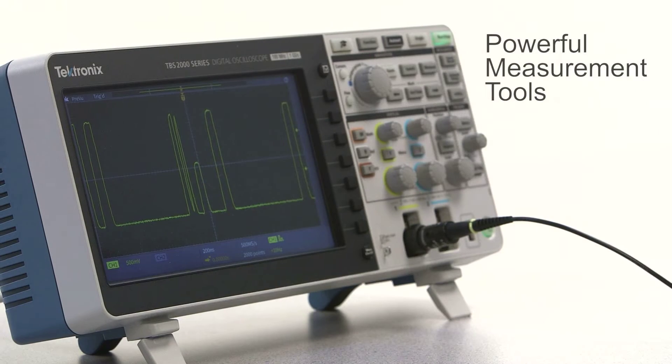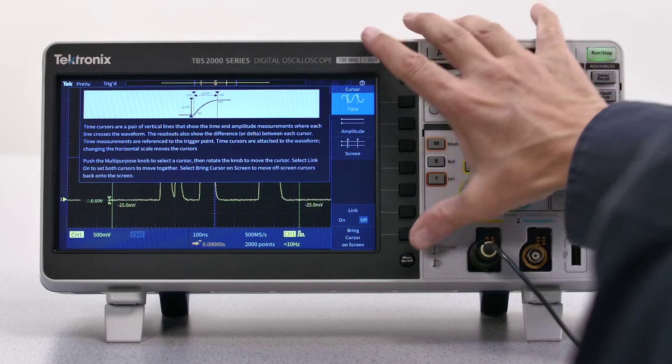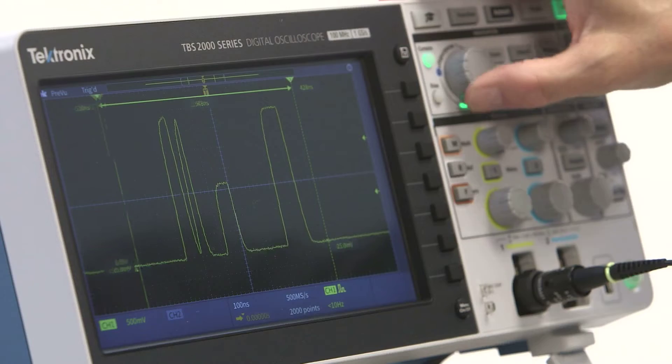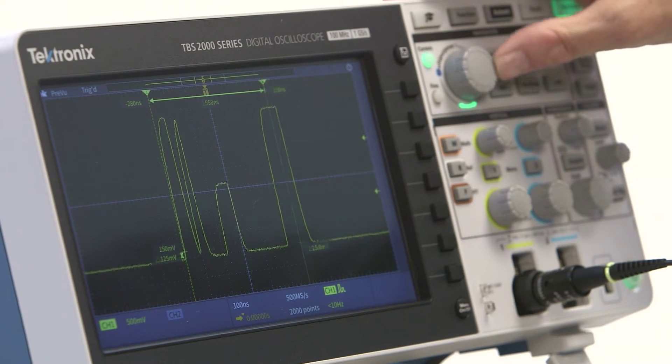The TBS 2000 is built for taking measurements quickly and easily. Cursors make it easy to measure time differences, amplitude differences, or both at once. You can select from three different sets of cursors, and on-screen tips explain the differences.